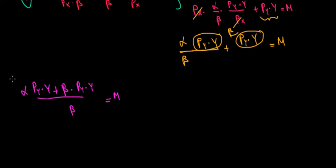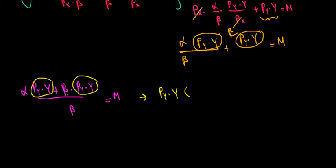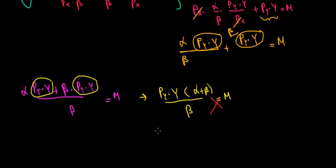Now we can work with our common factor price of y times y. Taking it as a common factor, we have price of y times y times alpha plus beta in brackets, divided by beta, equals m. Let's do a cross product to see what we get. We would have price of y multiplied with y times alpha plus beta is equal to m multiplied with beta.